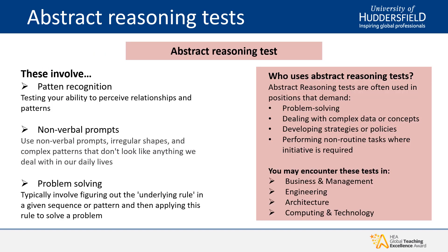Next, that brings us on to abstract reasoning tests. Abstract reasoning tests are all about pattern recognition — you may be given a sequence and need to predict what the next element is. You will be presented with nonverbal prompts, irregular shapes and complex patterns that don't resemble anything you'd typically deal with in daily life. Problem solving is a key skill tested here, as these tests typically involve figuring out the underlying rule in a given sequence or pattern and then applying that rule to solve a problem.